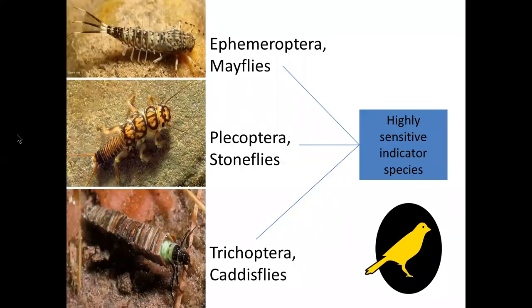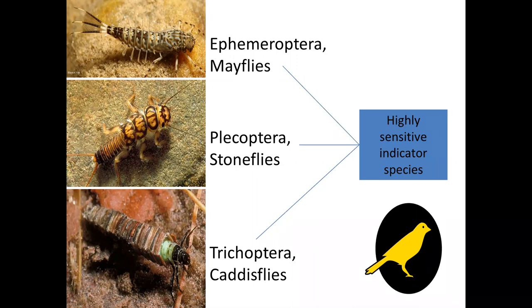We really want to look at the big three: the mayflies, stoneflies, and caddisflies — or Ephemeroptera, Plecoptera, and Trichoptera. These are our highly sensitive indicator species, and we look at these because they're the first to change in their population densities when there is a problem.